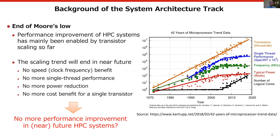However, due to physical limitations and cost reasons, increasing the number of transistors will be slowed down. In such a scenario, we cannot expect any performance gain by transistor scaling in future HPC systems. This is a big challenge in our community.